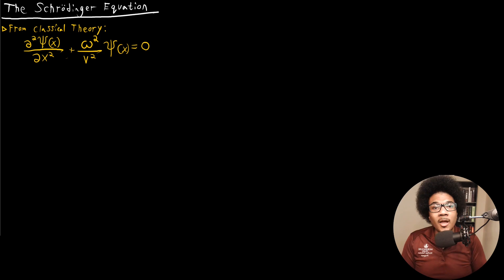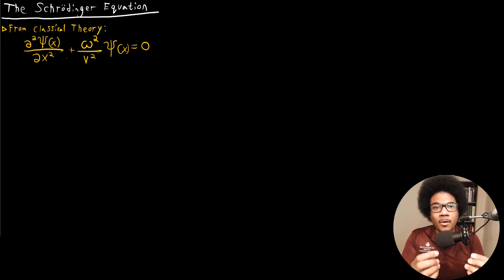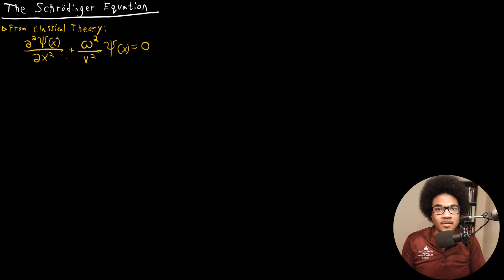In this video, we're going to introduce the Schrödinger equation. In the previous lecture, we went through how waves are treated in classical mechanics and looked at the classical wave equation under the assumption that if particles have wave-like properties, there must be a wave equation that can define its properties. So we looked at the way waves are treated in classical mechanics, and we got down to this equation, where psi of x is the spatial function for the wave, omega is the angular frequency, and v is the wave velocity.